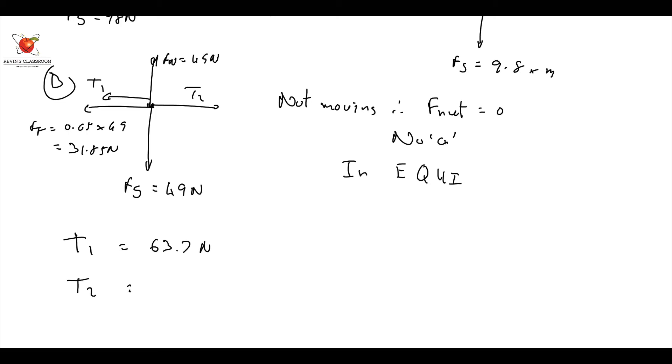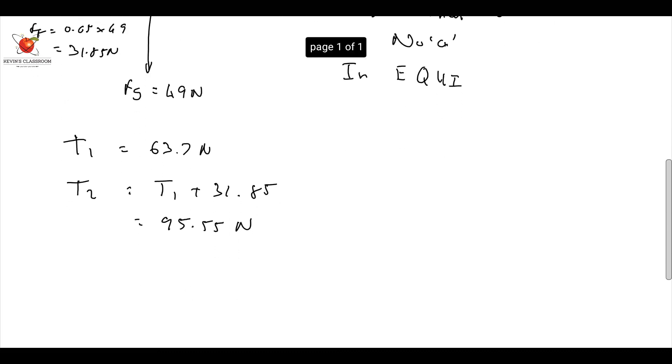And if I go, I can say T2 is going to be equal to T1 plus 31.85. Therefore, it's going to be equal to 95.55 newtons. And then I can say, the last one, this is going from A, this was at B, now I say at C, therefore 95.5, because that's T2, is equal to 9.8 times M. Therefore, M is going to be equal to 9.75 kilograms like that.